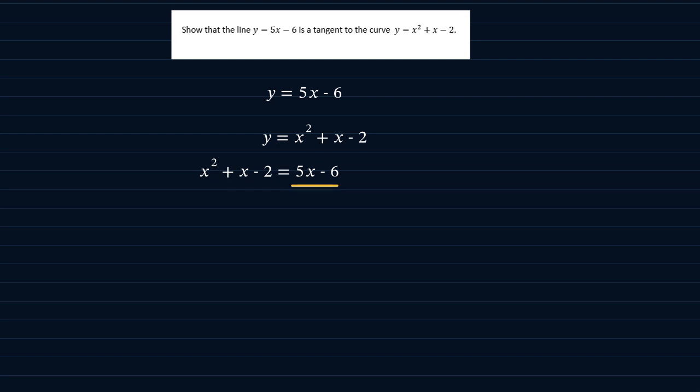If we take this to the left hand side, then we are going to have x squared plus x minus 2 minus 5x plus 6 equal to zero. And by simplifying, finally, we will get x squared minus 4x plus 4 equal to zero.